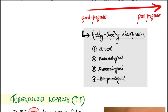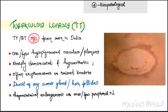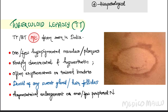The Ridley-Jopling classification is based on clinical, bacteriological, immunological, and histopathological features. Tuberculoid leprosy (TT) is one of the most common forms seen in India. There is one or few hypopigmented macules or plaques, sharply demarcated and hypoesthetic, often erythematous or with raised borders. The lesions are devoid of sweat glands or hair follicles, and there is asymmetrical enlargement of one or few peripheral nerves.